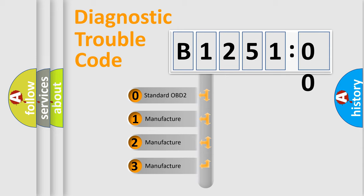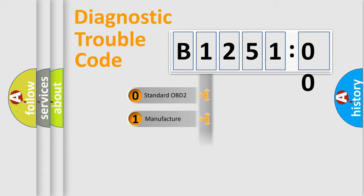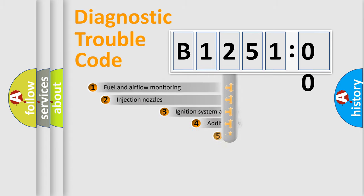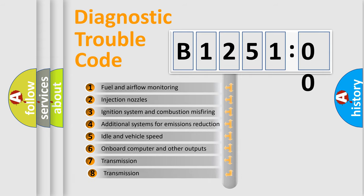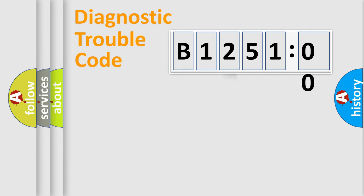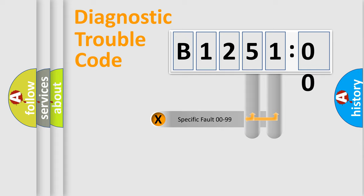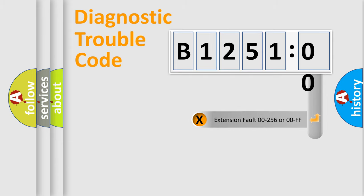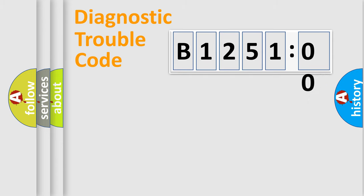If the second character is expressed as zero, it is a standardized error. In the case of numbers 1, 2, or 3, it is a manufacturer-specific error expression. The third character specifies a subset of errors. This distribution is valid only for the standardized DTC code. The last two characters define the specific fault of the group. The add-on to the error code serves to specify the status in more detail.